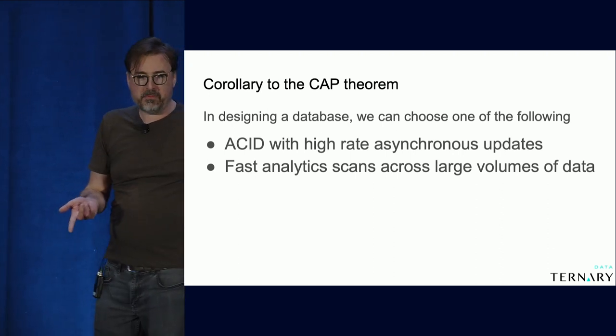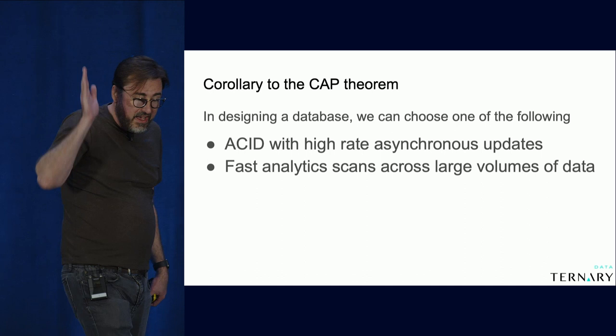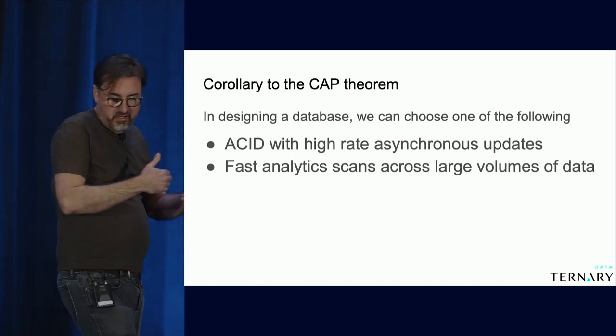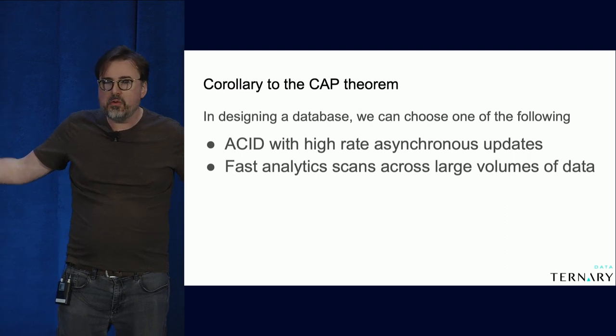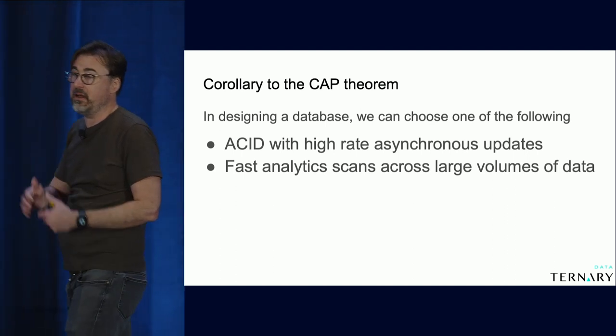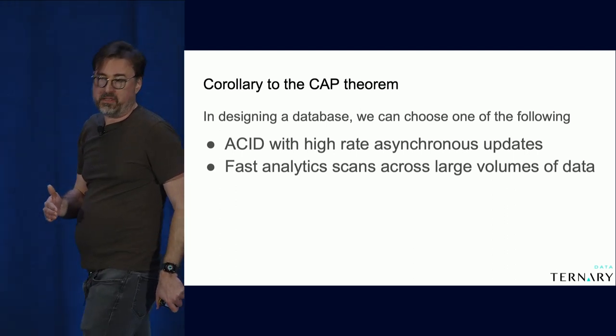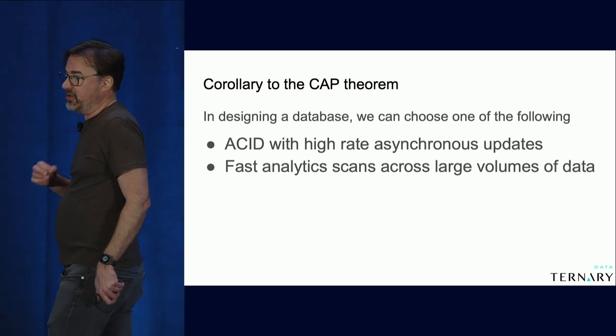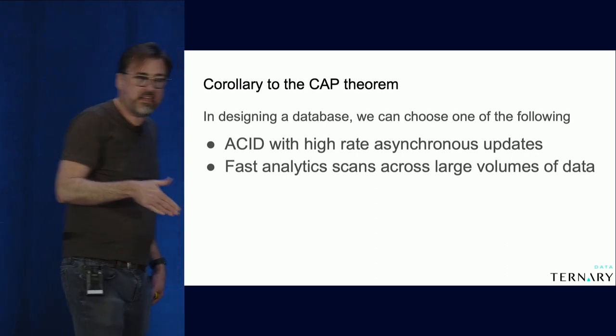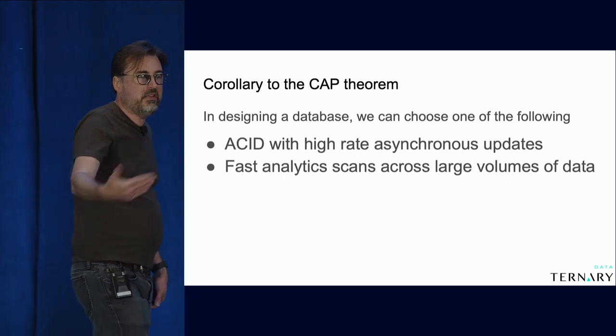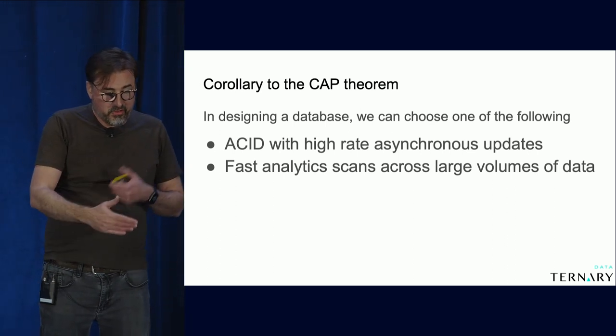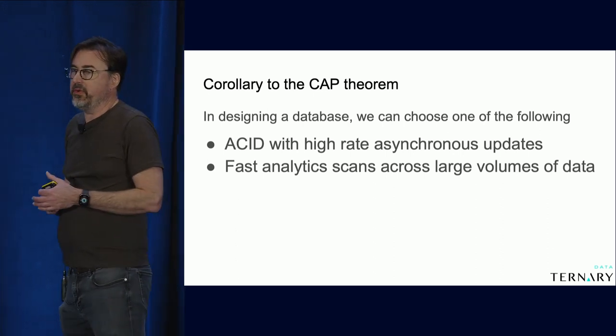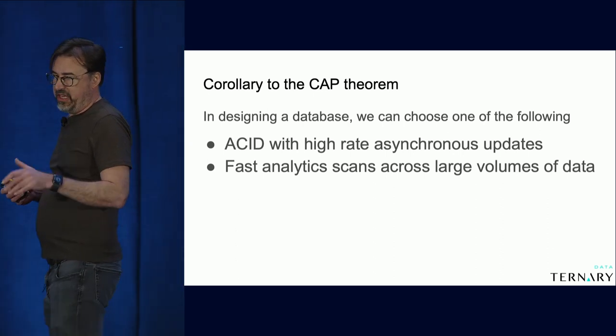In general, that will conflict with the second application, which is fast analytic scans. The second bullet point is a database that's designed to scan, could be 100 gigabytes or a terabyte of data all at once very quickly and then return statistical or analytical results on that data. The second type of database is typically used in analytics or machine learning applications. In general, you can't satisfy both of these things at the same time.